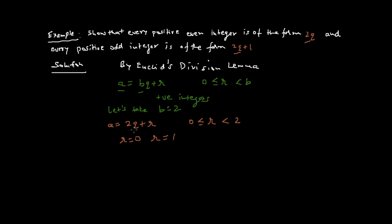Putting r equal to 0 in this expression, we get a equal to 2q. And by putting r equal to 1 in this expression, we get a equal to 2q plus 1.